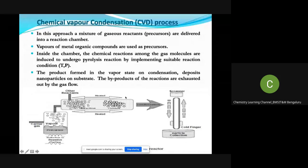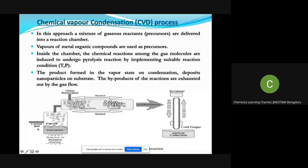This is the reaction chamber. In the reaction chamber we have a substrate, we have the starting reactant materials which are the precursors, and another thing which we have is carrier gas. So which are the three major important factors which we need here?